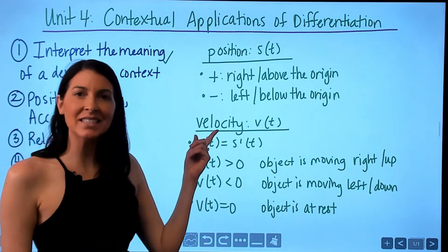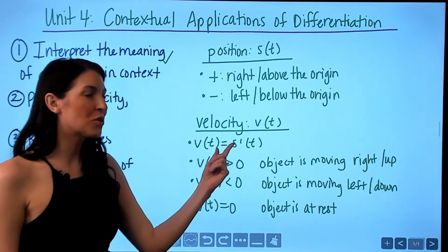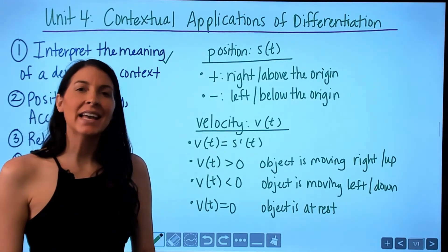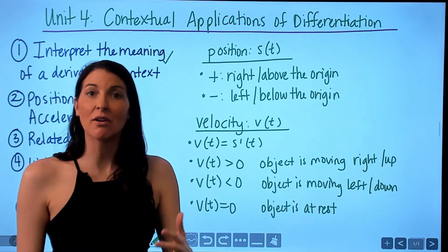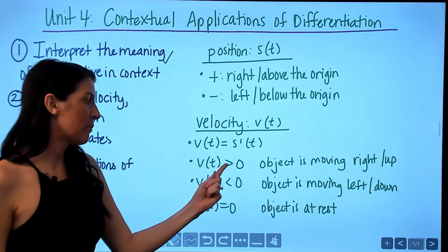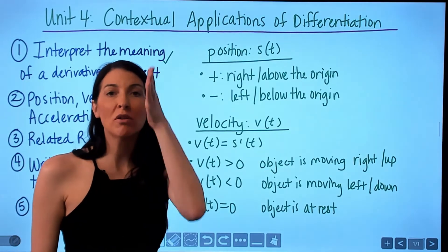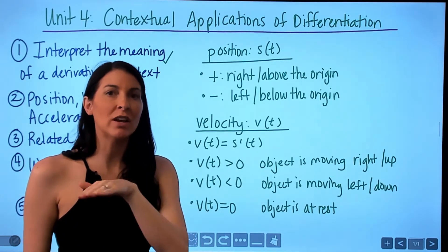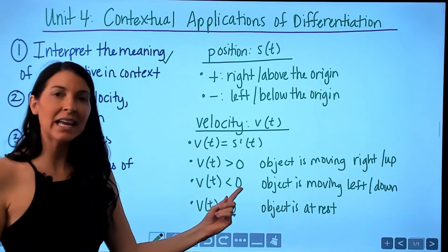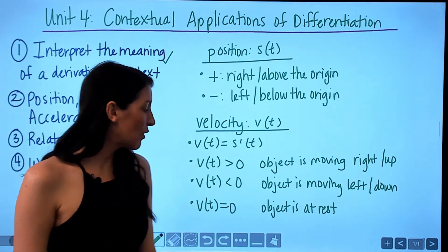Velocity is denoted v(t) and is the rate of change — the derivative — of position. It tells you the direction of movement. If velocity is positive, the object is moving right or up; if velocity is negative, the object is moving left or down.